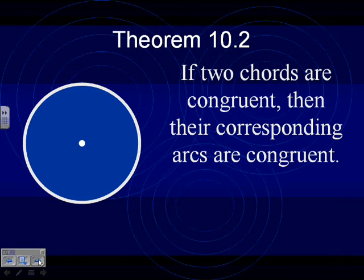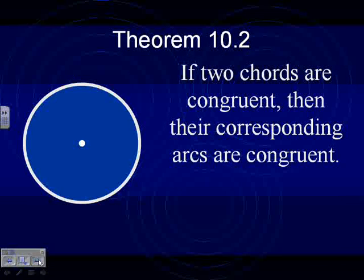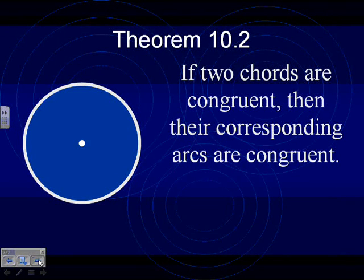If two chords are congruent, then their corresponding arcs are congruent. Remember that word, corresponding, kind of just means things that go together. So it's going to be the arcs that are formed by the two chords that we're looking at.